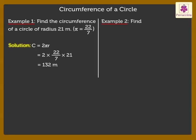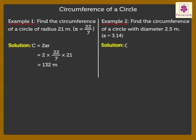Lastly, find the circumference of a circle with diameter 2.5 meters. Take pi as 3.14. Circumference is equal to pi into d. That is equal to 3.14 into 2.5 is equal to 7.85 meters.